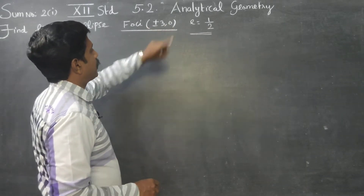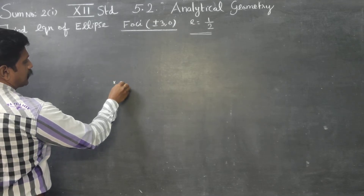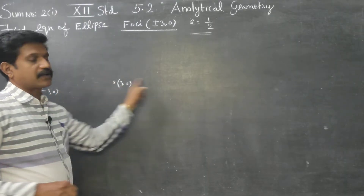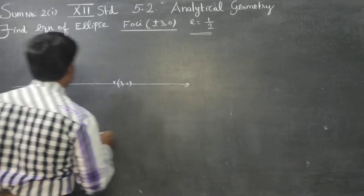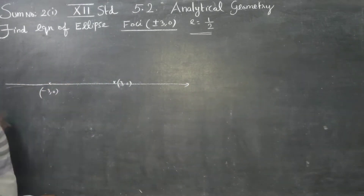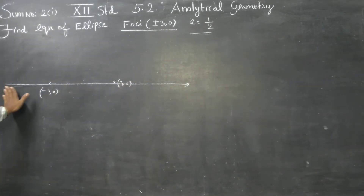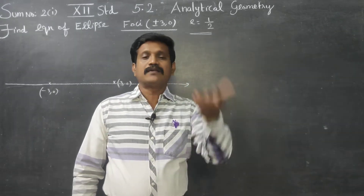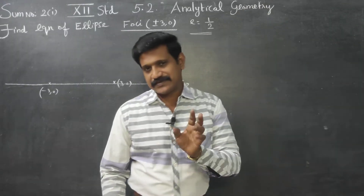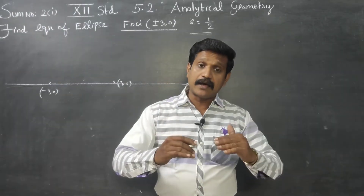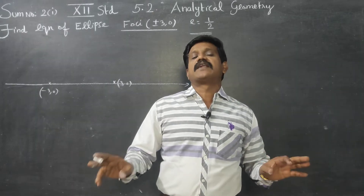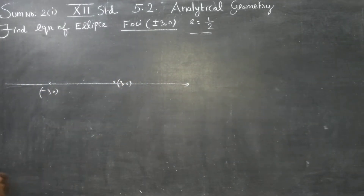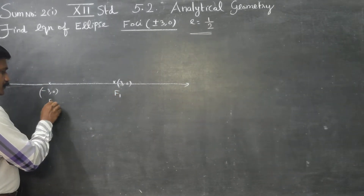Plus 3 comma 0 and minus 3 comma 0 will be on the horizontal platform, that is the horizontal axis, the x-axis. 3 comma 0 and minus 3 comma 0 will be on the horizontal axis. It may be on the x-axis or a line parallel to x-axis. This is my F1 and this is my F2.